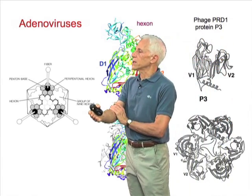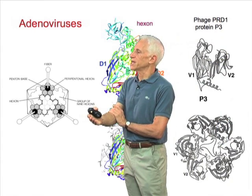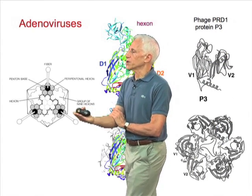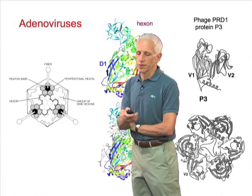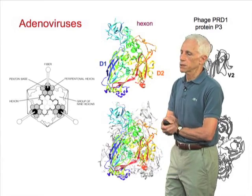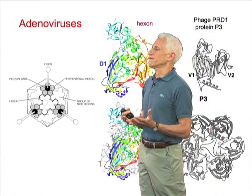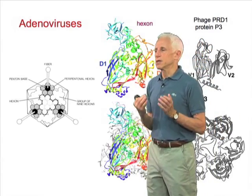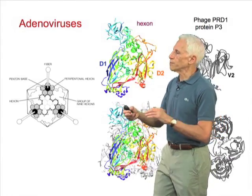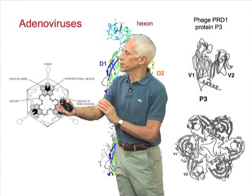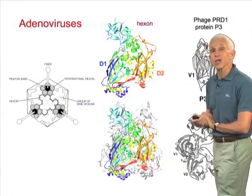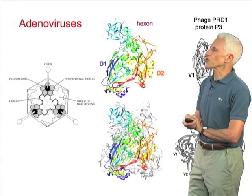The particle has a strikingly icosahedral shape, with fibers coming out of the five-fold positions that are responsible for cell attachment. The main part of the coat is represented by a protein called hexon, because it forms these sorts of hexagonally packed arrays, but in fact the hexon is not a hexamer.